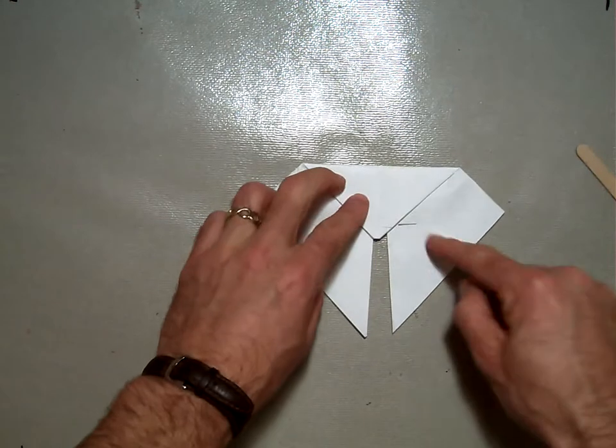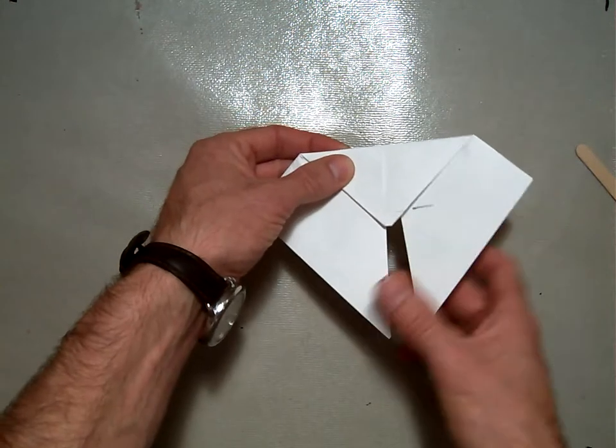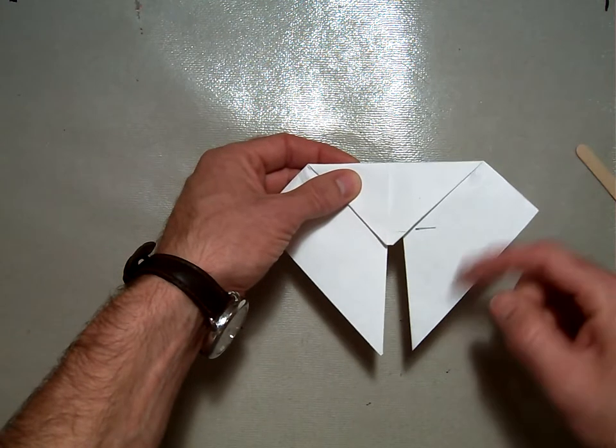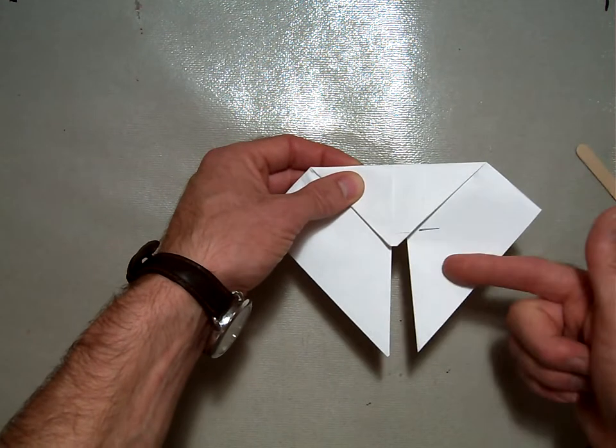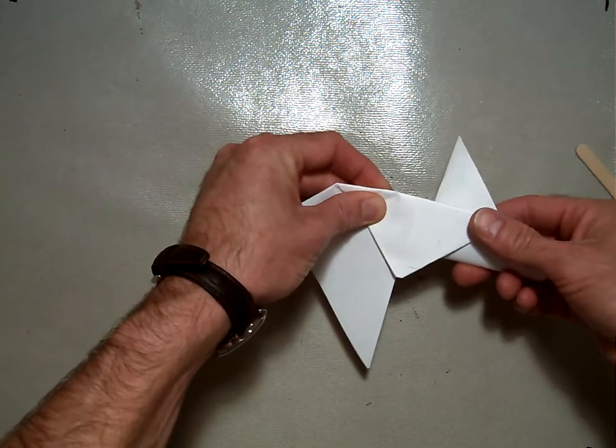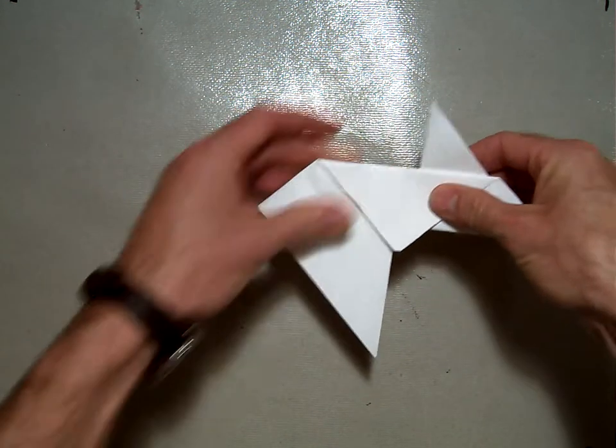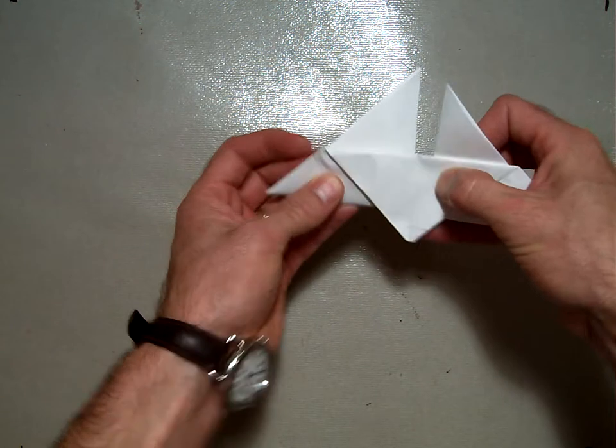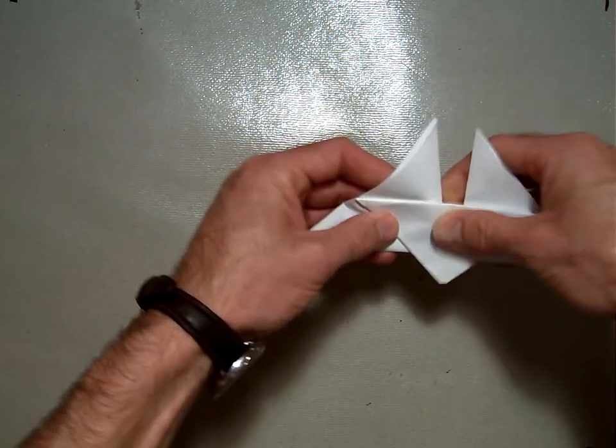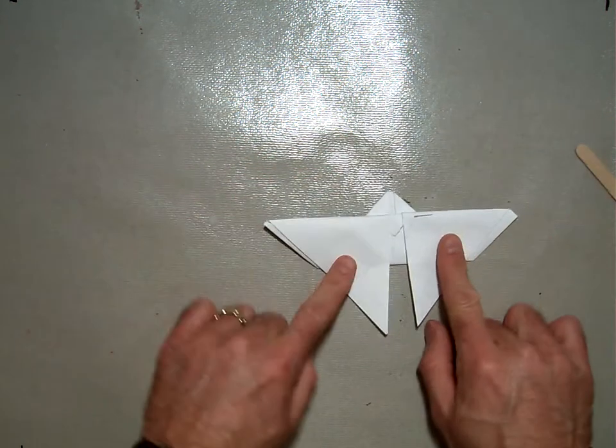Then it says take these two wings here and fold them back in a mountain fold. A valley fold would be like that but we want to fold a mountain fold back around like this. And if I show you that from the other side it looks like this.